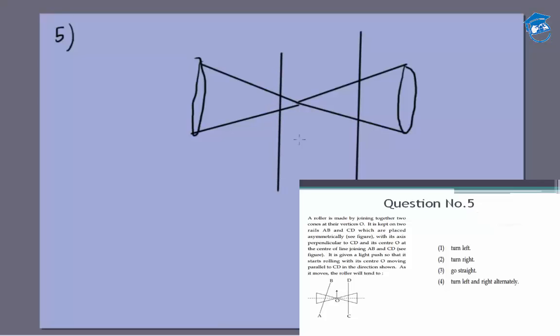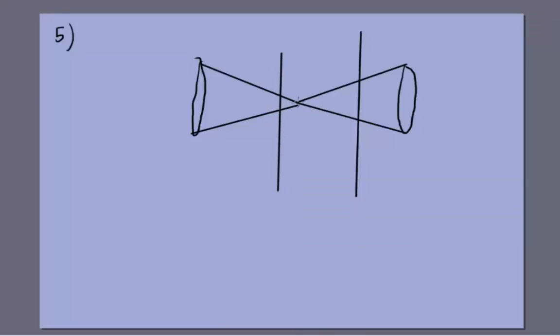So let's assume that the two infinite rails are like this: one of them is closer to the center than the other. Now the whole system of two cones is a rigid body. Let's say it rolls in this direction by an angle theta. That means in this direction also it will be rolling by an angle theta.